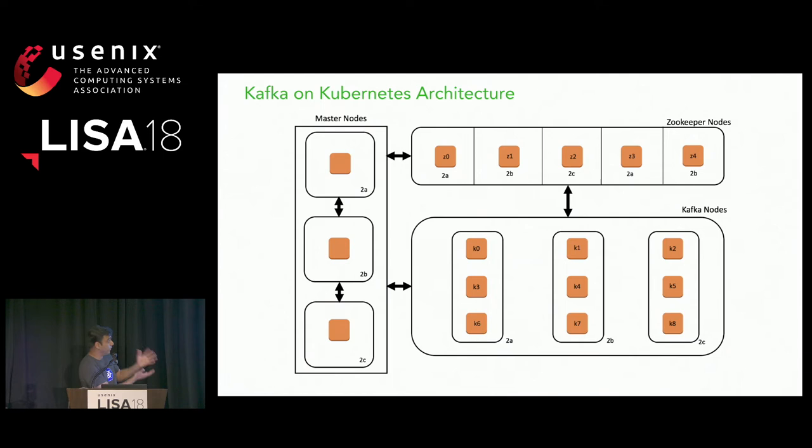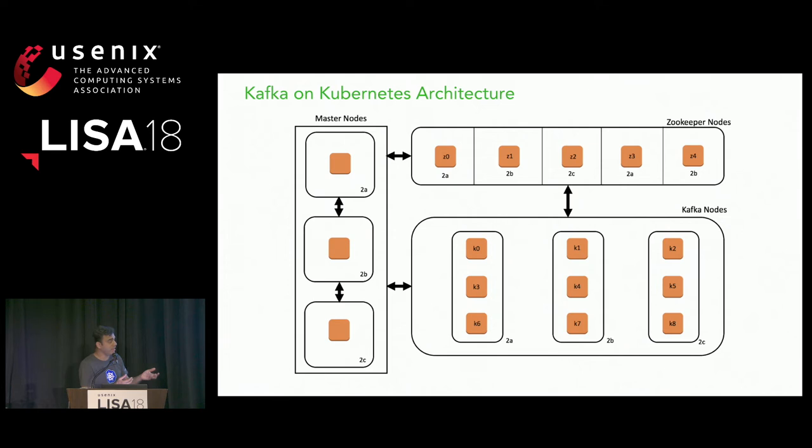After giving it additional thought, this is what we decided on. We would have a Kubernetes cluster with three master nodes — one in each zone: US West 2A, 2B, and 2C. Zookeeper needs to be odd in number because it runs a leader election, so there were five instances of Zookeeper.